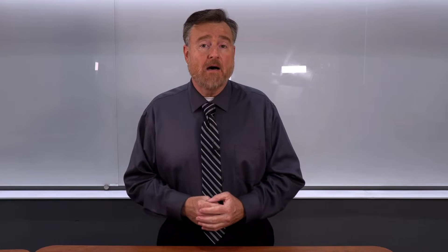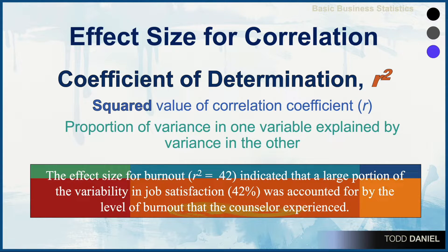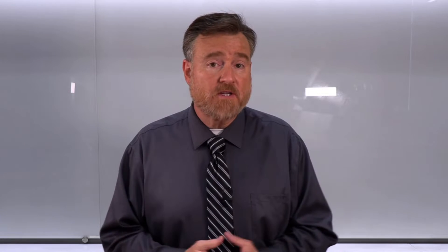If you were writing up your correlational coefficient and your coefficient of determination for an APA-style report, you would write it this way: 'The effect size for burnout, r-squared equals 0.42, indicated that a large portion of the variability in job satisfaction — 42% — was accounted for by the level of burnout that the counselor experienced.' You would want to customize this for your particular data set, but you could use this as your model for reporting the coefficient of determination.